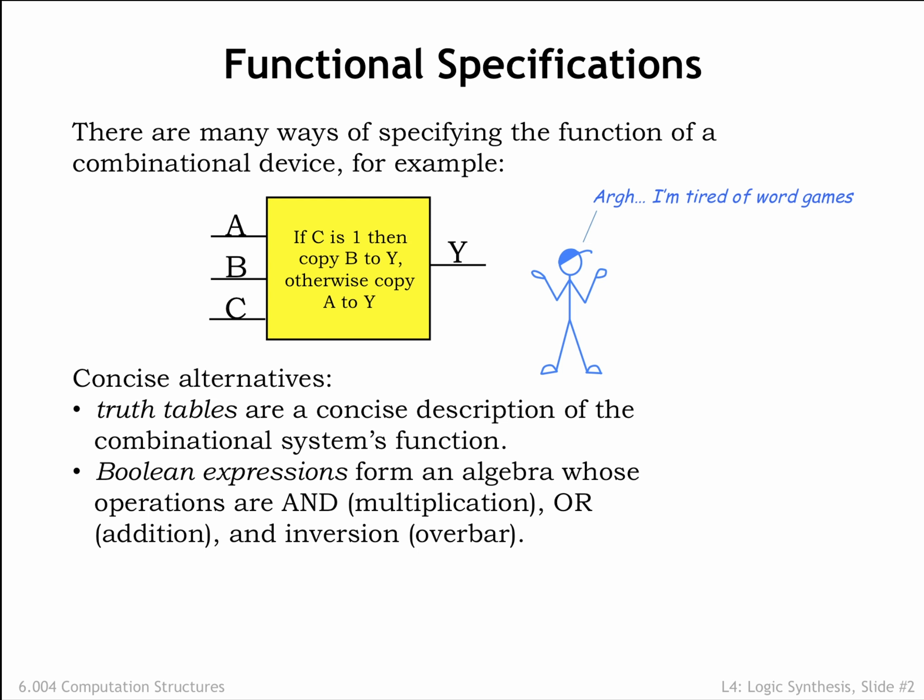There are good alternatives that address the shortcomings mentioned above. Truth tables are a straightforward tabular representation that specifies the values of the outputs for each possible combination of the digital inputs. If a device has n digital inputs, its truth table will have 2 to the n rows.